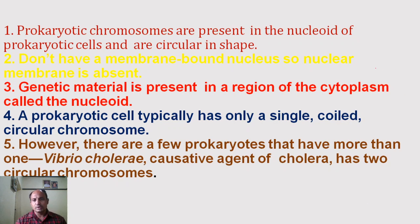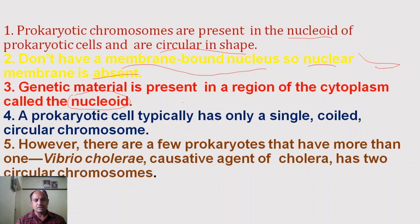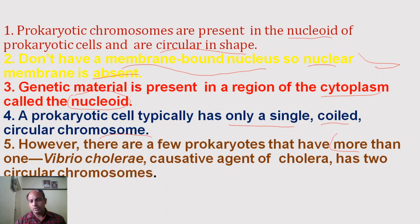Prokaryotic chromosomes are present in the nucleoid region of the prokaryotic cell and are circular in shape. There is no membrane-bound nucleus, so the genetic material is present in the cytoplasm region called the nucleoid. These prokaryotic cells have only a single coiled circular chromosome, though some prokaryotic cells can have more than one chromosome.